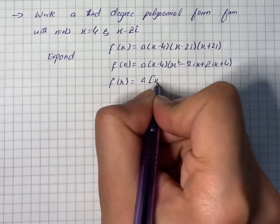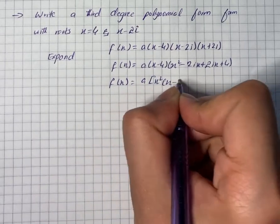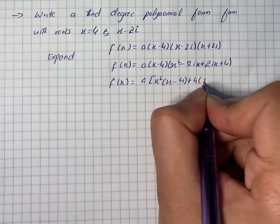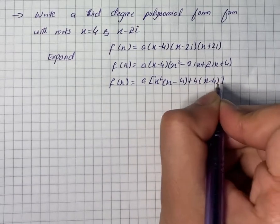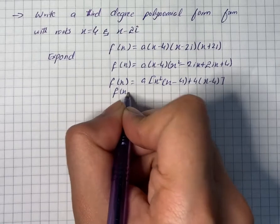This equals a[x²(x - 4) + 4(x - 4)], so f(x) = a(x³ - 4x² + 4x - 16).